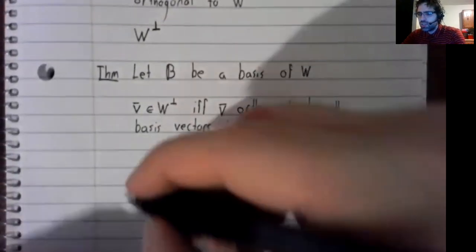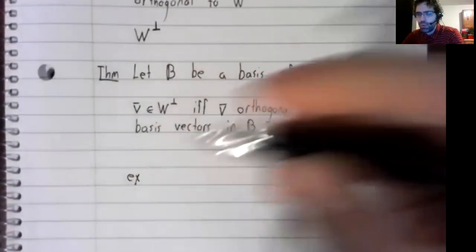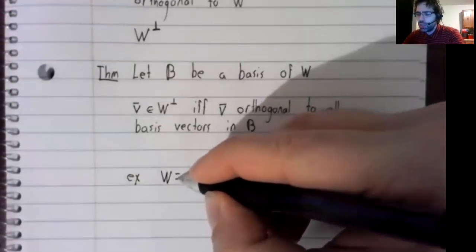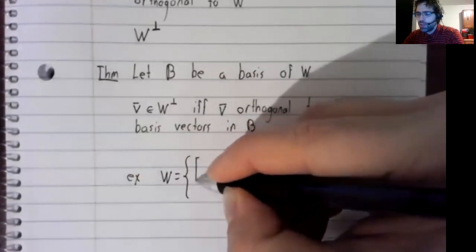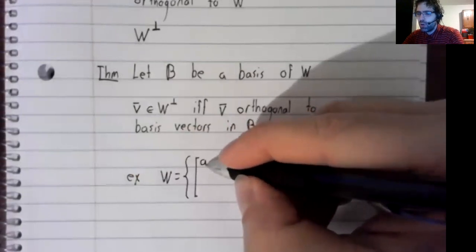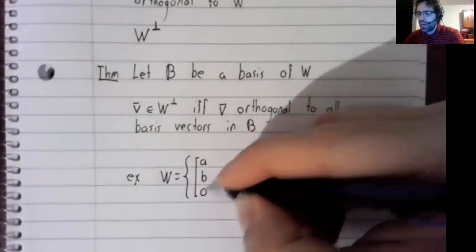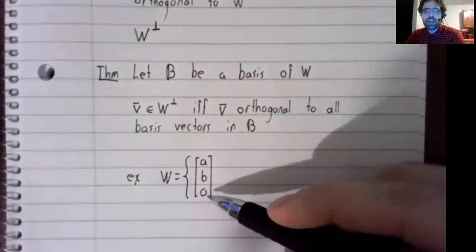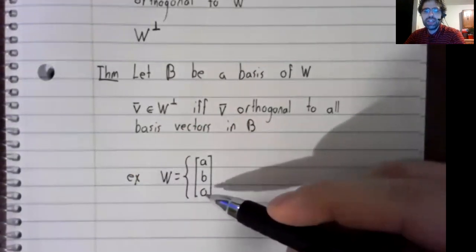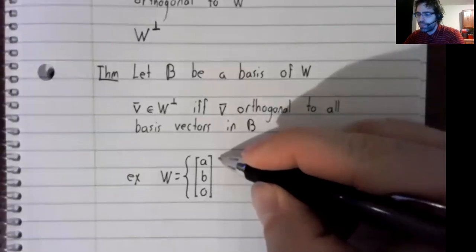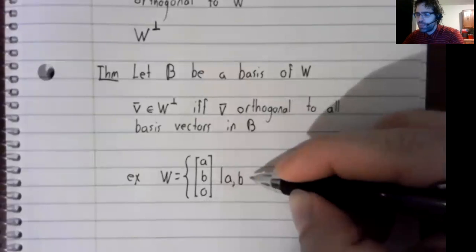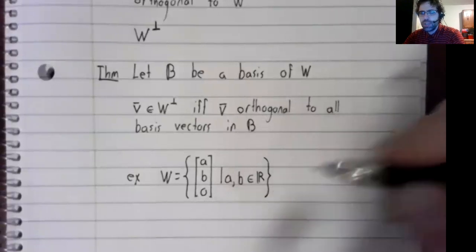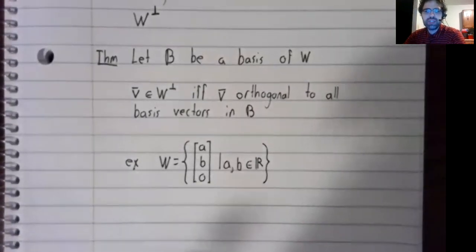So just as a quick example of this theorem. Let W be the set of all vectors in R3 such that the third component of W is zero. So A and B are arbitrary real numbers, but the third component is zero.